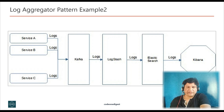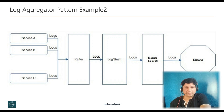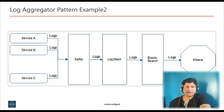In this diagram, each microservice generates a log which is published using a Kafka log appender. This outputs the log message to a Kafka cluster. Log Stash ingests the message from Kafka, transforms the message and publishes to an Elasticsearch container. Kibana then provides a visual interface to search, read or index logs from the Elasticsearch container and provides the required filters.